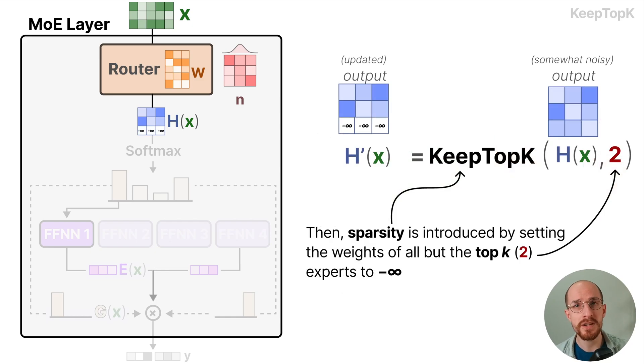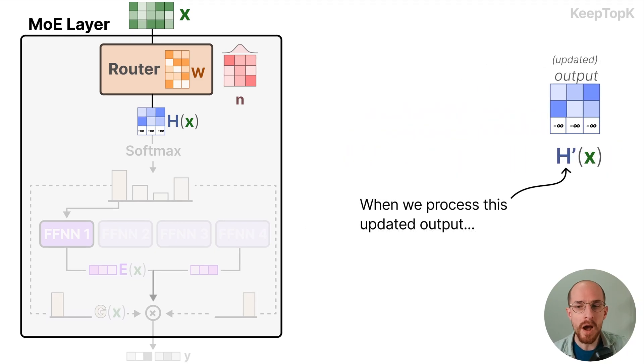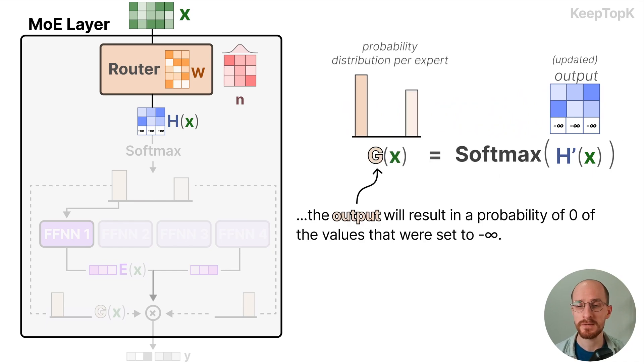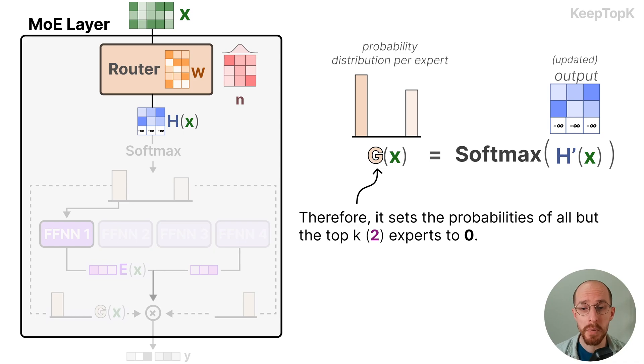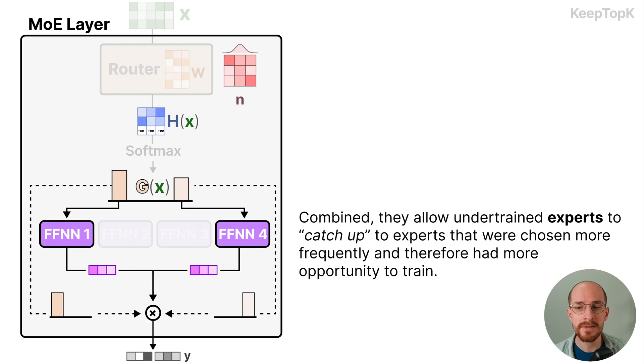Then sparsity is introduced by setting the weights of all but the top two experts to minus infinity. And when we process this updated output with a softmax function the output will result in a probability of zero of all the values that were set to minus infinity. Therefore it sets the probabilities of all but the top two experts to zero. Combined they allow undertrained experts to catch up to experts that were chosen more frequently and therefore had more opportunity to train.